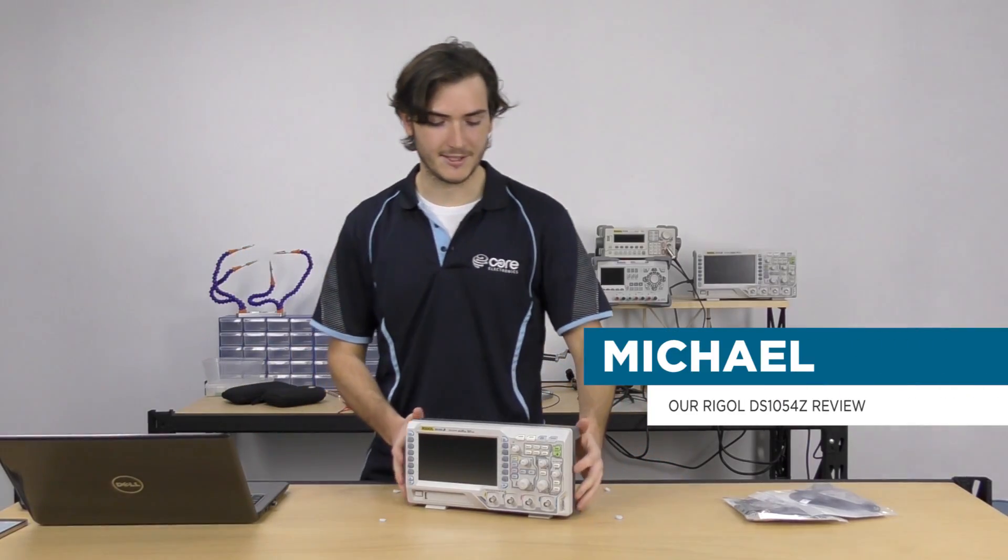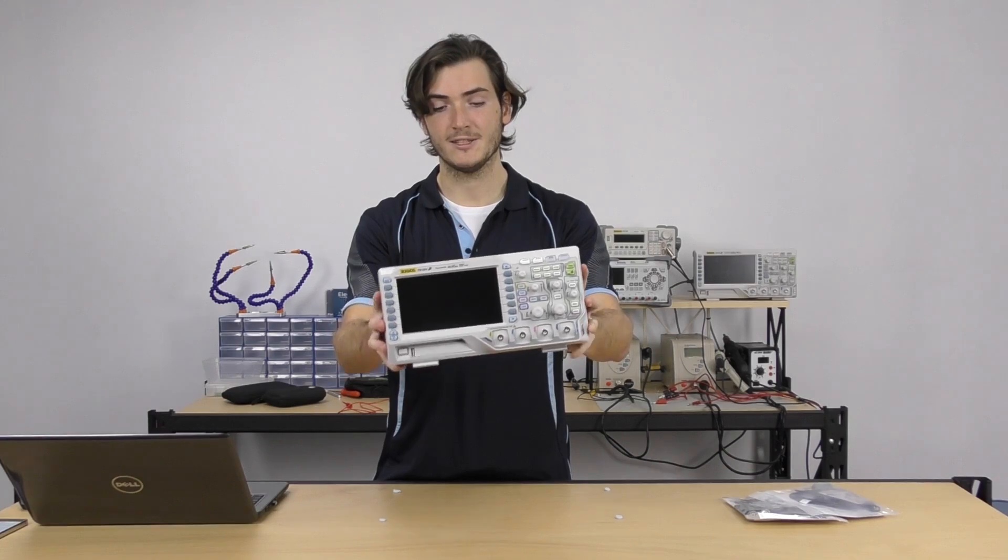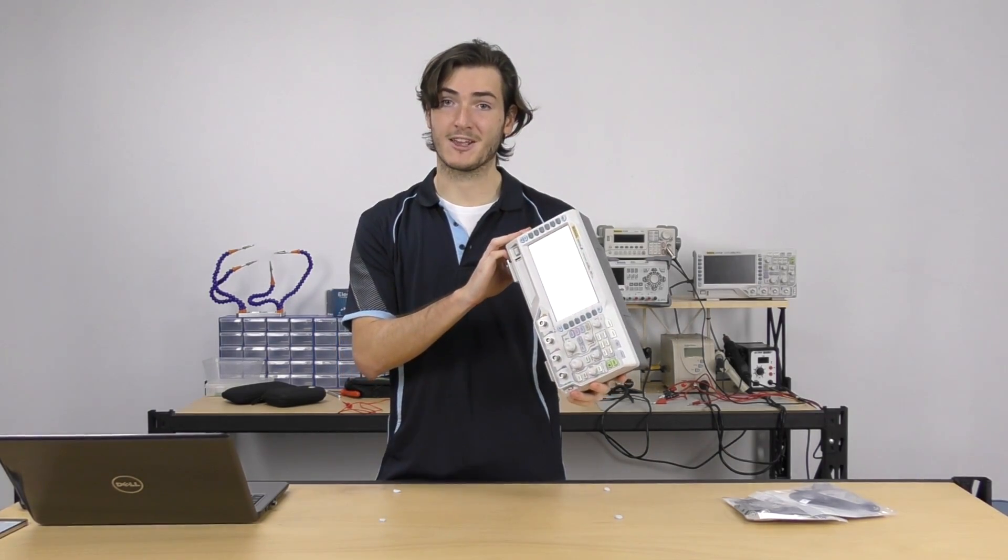G'day, today I'm going to be reviewing the DS1054Z oscilloscope from Rigol. This is a 50 megahertz four-channel scope. Let's take a close look.